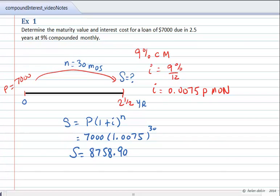Now, if the maturity value is $8,758.90, that means that our interest is simply the difference between the maturity value and the present value, so that would be S minus P. The interest then is equal to the maturity value of $8,758.90 less the $7,000. And that gives us the interest costs on that loan of $1,758.90.